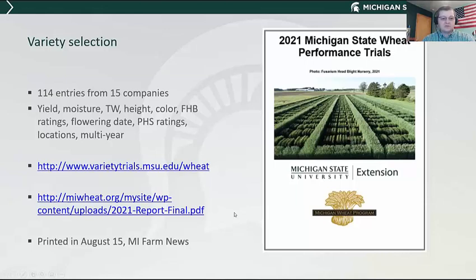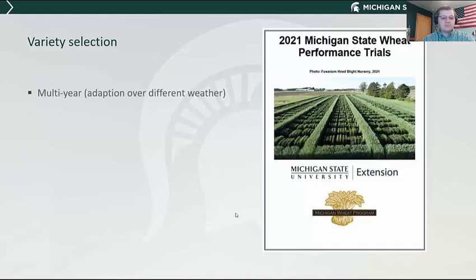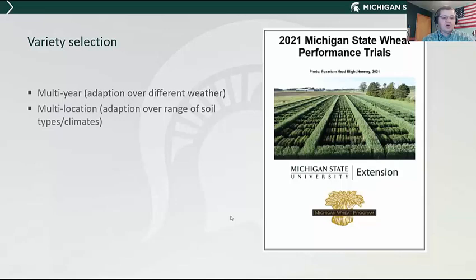In terms of variety selection, multi-year data is most important. In our trials, about a third of the entries are new every year, so we don't have two and three-year data on all varieties. But when you're making a decision about what variety to plant, you want to know how it does over multiple years because you have different weather patterns each year. Also look at different locations — look at the two nearest to you or those with the most similar climate or soil types.